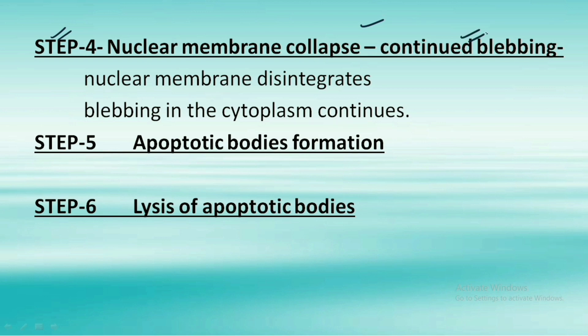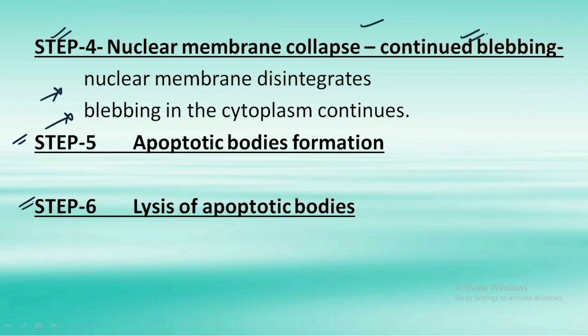Step four: the nuclear membrane collapses and blebbing continues. The nuclear membrane disintegrates and blebbing occurs in the cytoplasm as well. Step five: formation of the apoptotic bodies occurs, and finally the lysis of the apoptotic bodies completes the process of apoptosis.